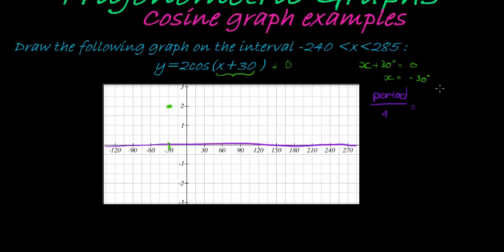The period is 360 degrees divided by the coefficient of x, which is 1, so it's 360, and that divided by 4 gives me 90. So starting at this point, I must divide my center line into units of 90.